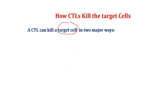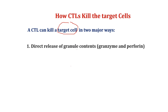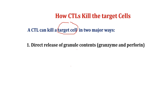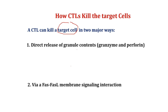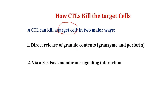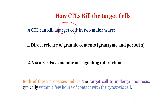The first way is via the directional release of granule contents — granzyme and perforin. Granzyme is a protease enzyme. The second way is via FAS-FAL membrane signaling interaction with the target cell. Both processes induce the target cell to undergo apoptosis, typically within a few hours of contact with the cytotoxic T cells.